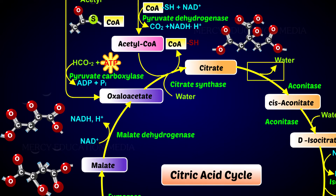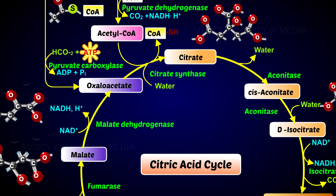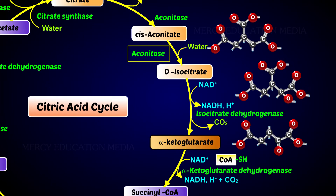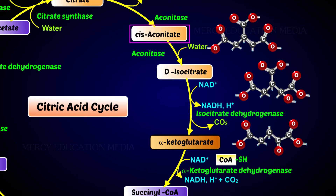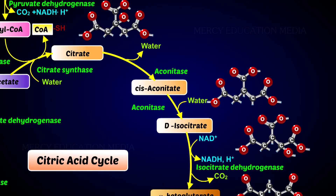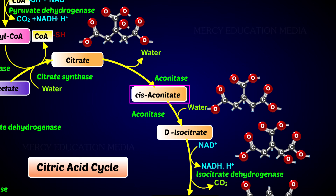Citric acid is dehydrated to form cis-aconitic acid in the presence of aconitase. The same enzyme aconitase catalyzes the formation of isocitric acid from cis-aconitic acid by the addition of a molecule of water. Citric acid, cis-aconitic acid, and isocitric acid all contain three carboxylic acid groups.